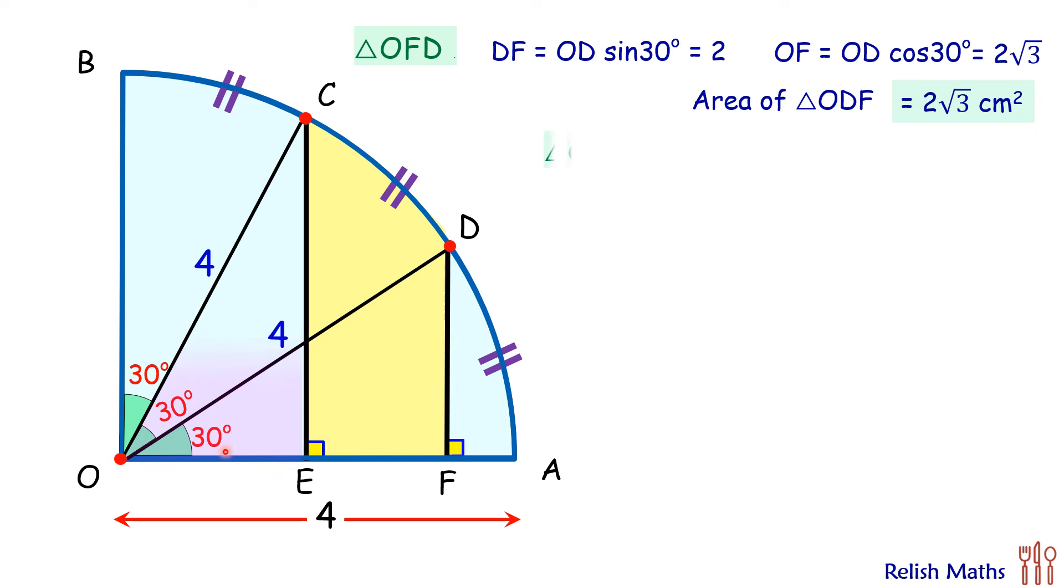Similarly let's look at triangle OEC. We have one side as 4 cm and this angle is 60 degrees.